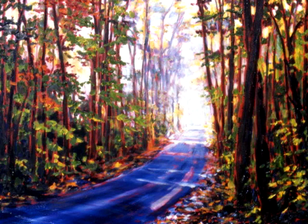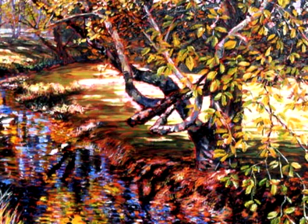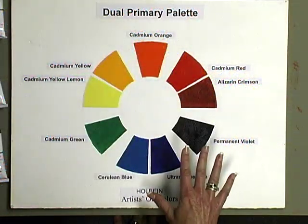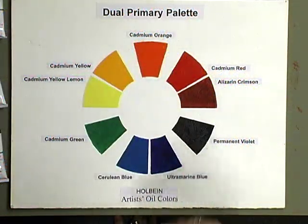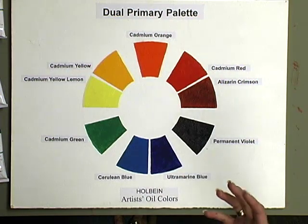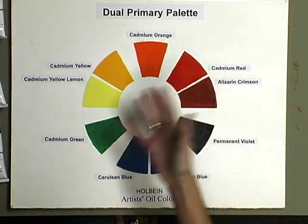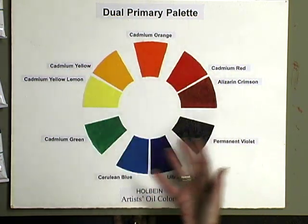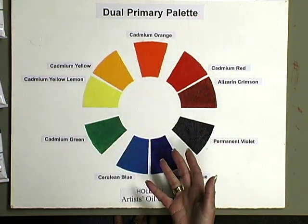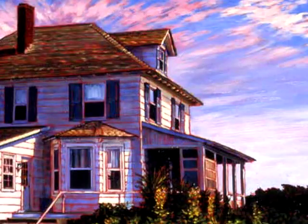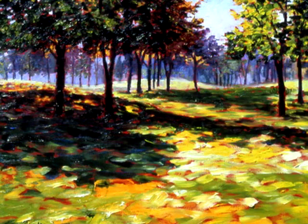Understanding color dynamics can be of great help to you in deciding how to use color. Why do we call them warm and cool colors? It's kind of a psychological sense, and I think it has to do with our own life experience in how we associate these colors with things that we see.